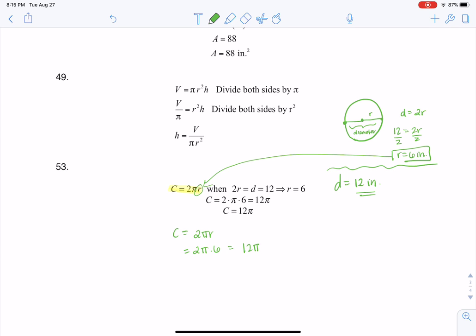And if you want to be technical, the units on this are inches because circumference is distance around the circle. And when we're talking about distance, we have one-dimensional units.